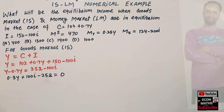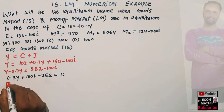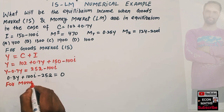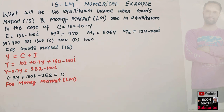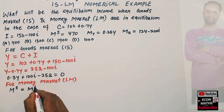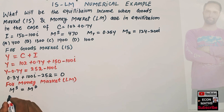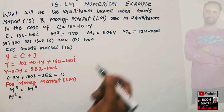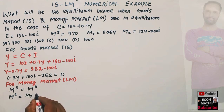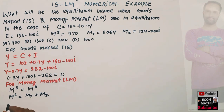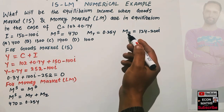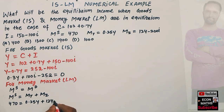Now we find the LM function. For money market equilibrium, money supply must equal money demand. Money demand has two components: transactionary demand plus speculative demand. Money supply is exogenously given as 470, so: 470 = 0.25Y + 124 - 200i.